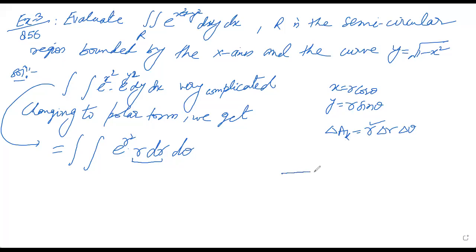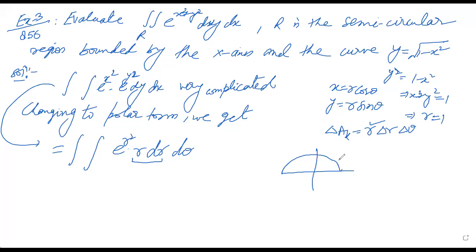Now I will find the limit of r. The region is given as a semi-circular region. The upper curve is y square is equal to 1 minus x square, that means x square plus y square is equal to 1. In polar form, r is equal to 1. So the ray enters at r equal to 0 and leaves the curve at r equal to 1.